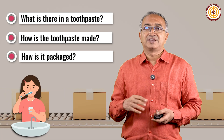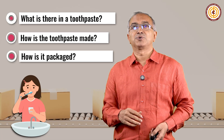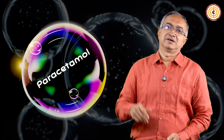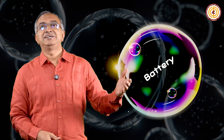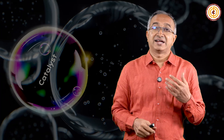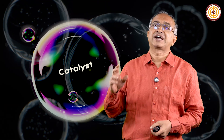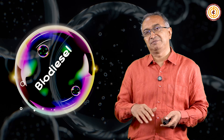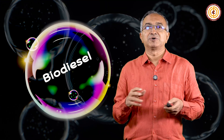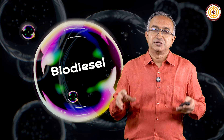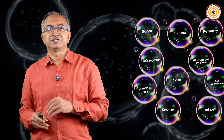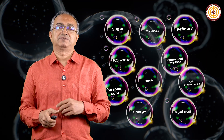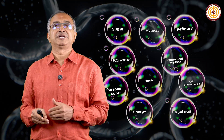Chemical engineers have a very important role to play, and not just in toothpaste. There are various examples: chemicals, drugs such as paracetamol, batteries and battery materials, catalysts which are used to enhance the rate of reactions, and bioplastics and biodiesel being developed so that we can become more circular and sustainable in our overall use of energy and materials. There are various examples of products, processes, and molecules which are being used, and each of these impacts our day-to-day life.